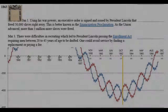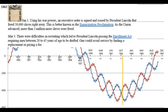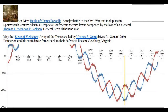On January 1st, 1863, President Lincoln signs the Emancipation Proclamation, an executive order freeing 50,000 slaves immediately; as the Union advanced, more than 3 million more were freed. On March 3rd, the Enrollment Act is passed requiring men aged 20–45 to be drafted, with exemptions by paying a fee or finding a replacement. In April–May 1863, the Battle of Chancellorsville in Spotsylvania County, Virginia results in a Confederate victory, though it is dampened by the loss of General Stonewall Jackson, Lee's right-hand man.